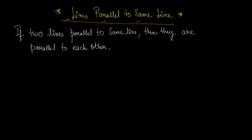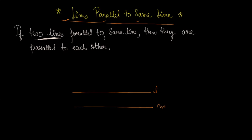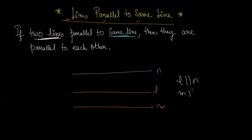Do you understand? If there are two lines — I have two lines, one is L and one is M. These two lines are parallel to the same line. So L is parallel to N, and M is parallel to N.